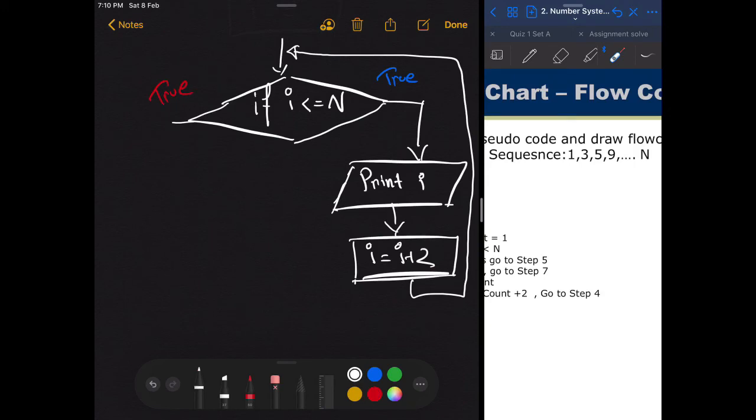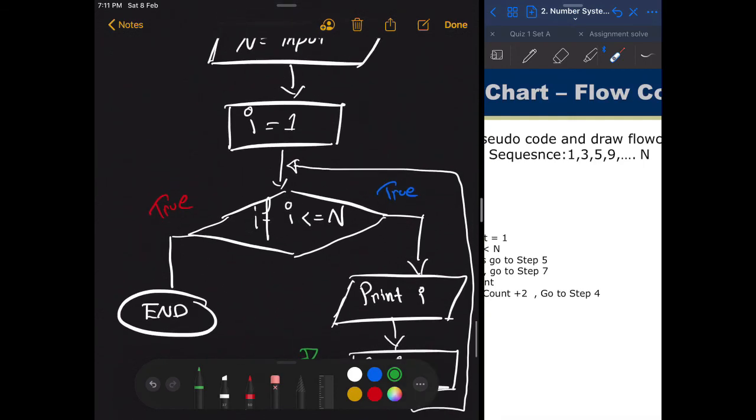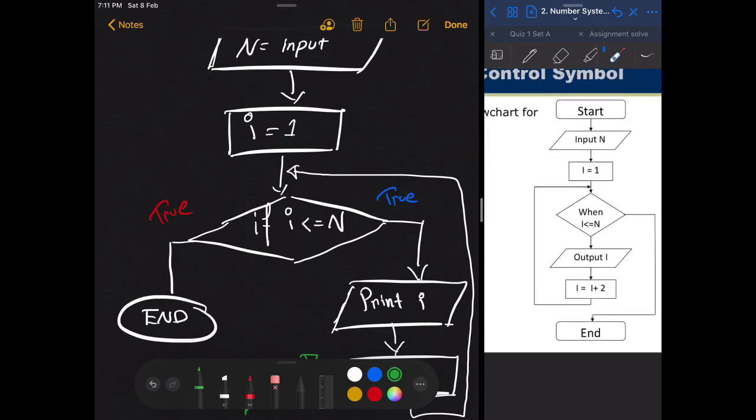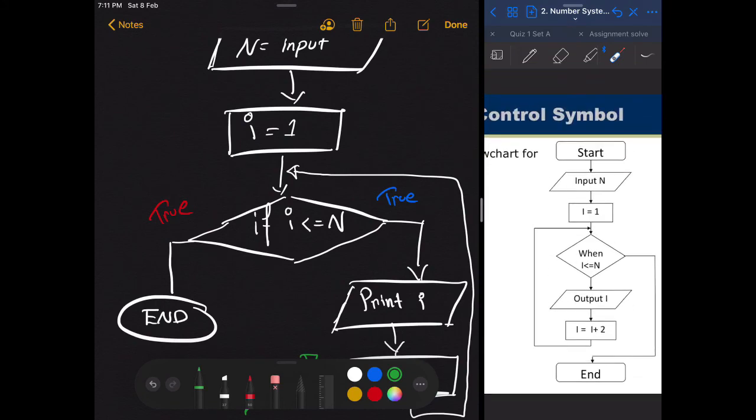And in the case where this condition doesn't satisfy, where i is not less or equal N, then we are done. We don't need to do anything else. We don't need to do any sums or anything. We just print all the values which was asked and we did that. We printed i and increase i by plus 2, and we are done. Let's see if it matches with our answer here. So yeah, it does match.